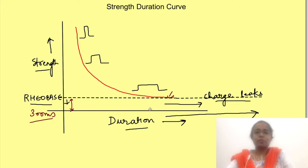Minimum because if you use above this strength obviously lesser time will be required, below this strength it will not produce any action potential. And the time for which the rheobase is given is known as utilization time.